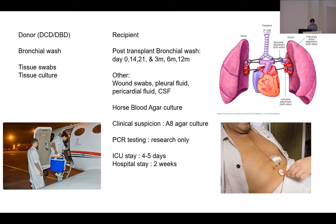Before implantation, we do tissue swabs and tissue cultures from the donor lungs. The transplantation involves anastomosing the recipient's main bronchi to the donor bronchi, the pulmonary artery to the donor pulmonary artery, and the pulmonary veins to the left atrium. We see infections at the bronchial anastomosis site, the median sternotomy wound, pericardium, pleura, and mediastinum. Recipients receive routine bronchoscopies and bronchial washings on the day of transplant, two weeks after, three weeks after, and at three, six, and twelve months.